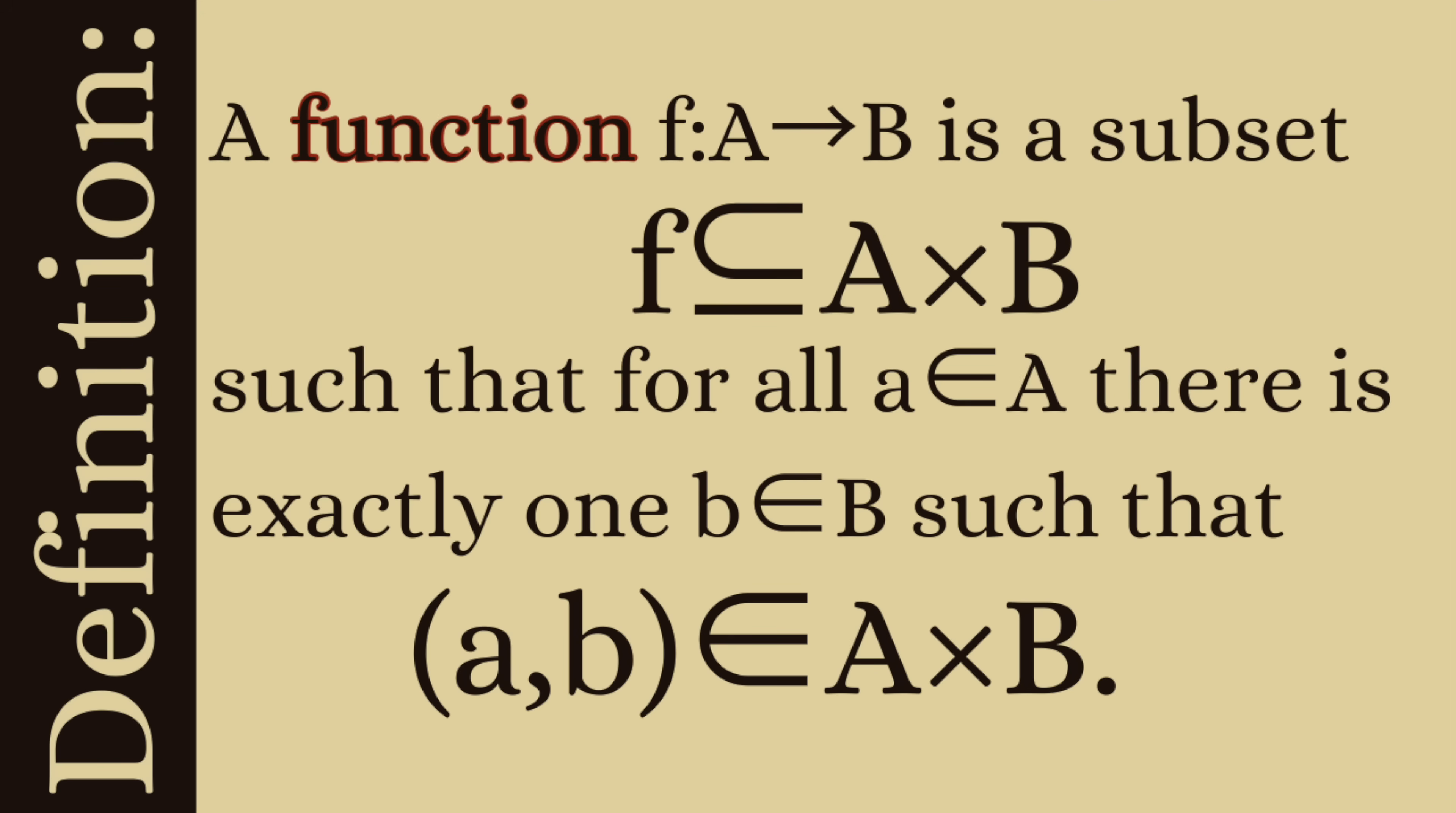In order to properly and abstractly define a function you really want to define it as a subset of A cross B. So that's going to be a function from A to B. So A is known as the domain and the set B is known as the codomain and then it has to satisfy a very important condition and that is for all a in A there is exactly one b in B such that (a,b) is in A cross B.